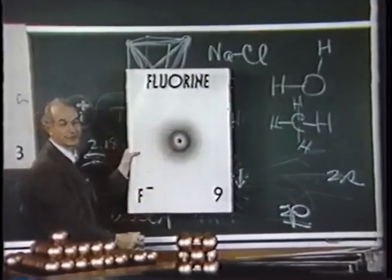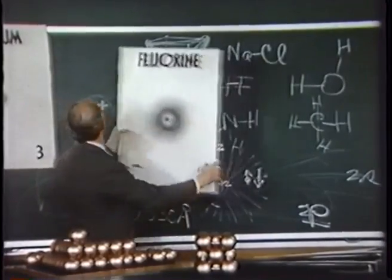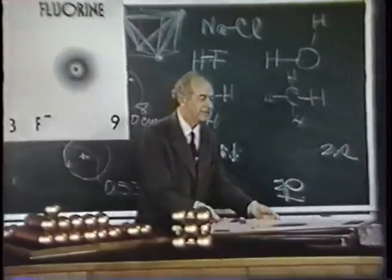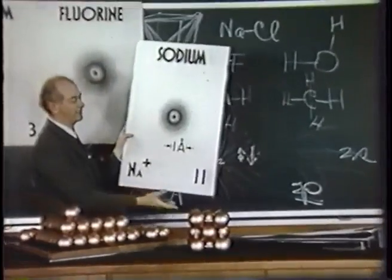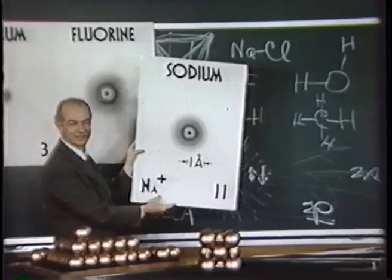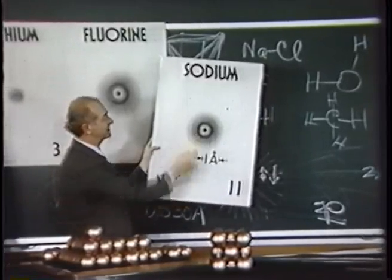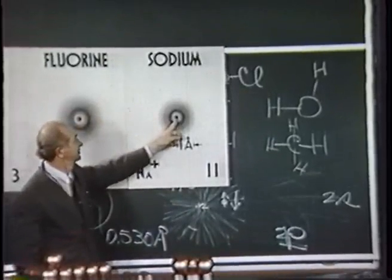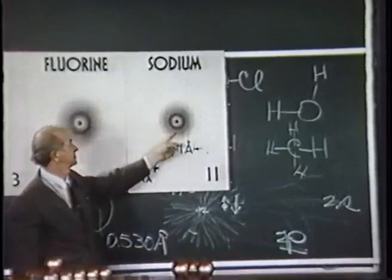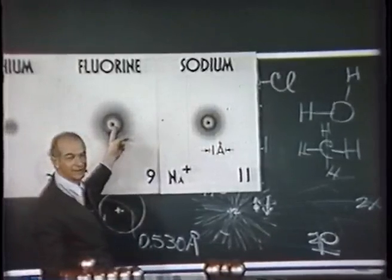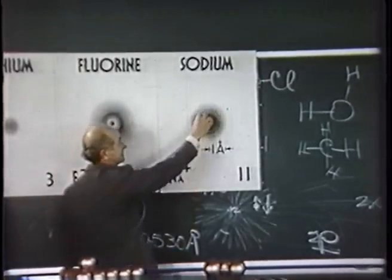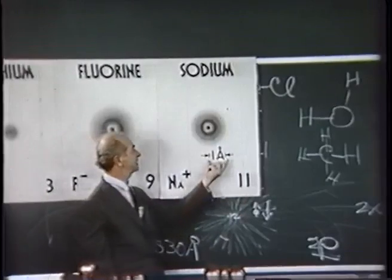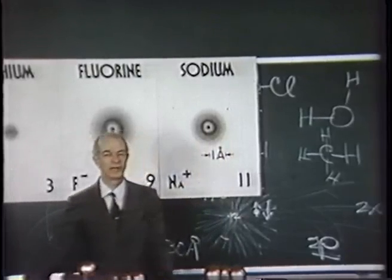You see that the fluoride ion is several times larger — roughly three times the diameter of the lithium ion. Here is the sodium ion. Sodium has 11 electrons; one of them has been lost to form the sodium ion Na+, leaving 10 electrons just as in the fluoride ion. The two in the helium shell are close in. The eight that constitute the neon shell are also shrunk in somewhat from the dimensions in the fluoride ion. This is the effect of the increase by about 20% in effective nuclear charge on going from fluorine to sodium. The sodium ion is about one angstrom in radius.